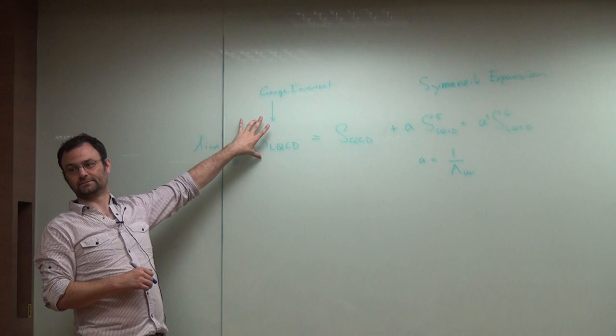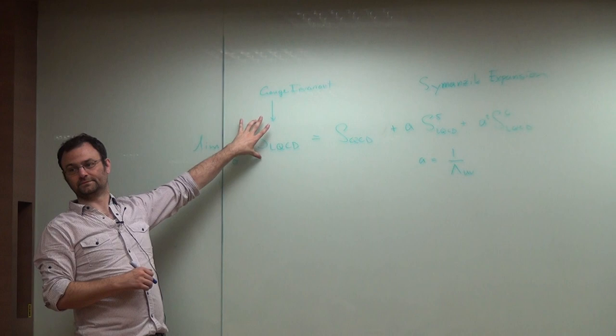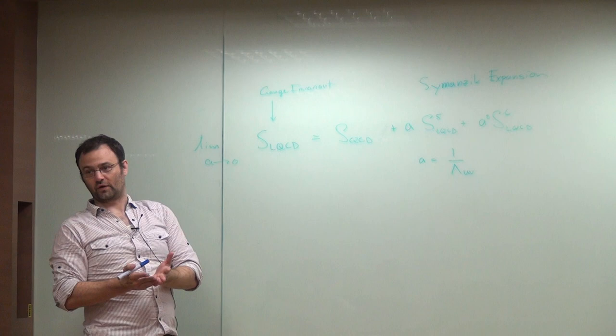By construction, the entire theory is gauge invariant. And we want that, because otherwise, if you didn't have a gauge invariant construction, if you are unlucky, or maybe almost all the time,